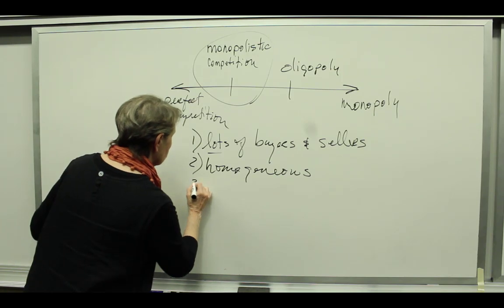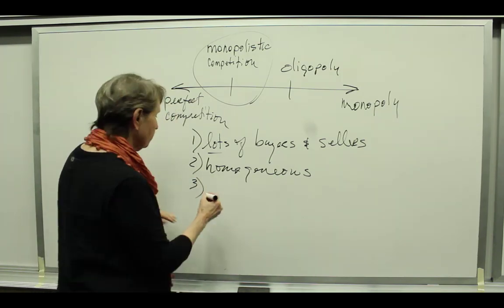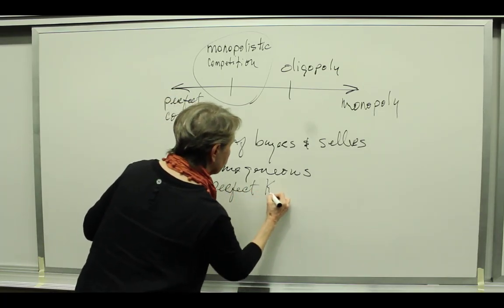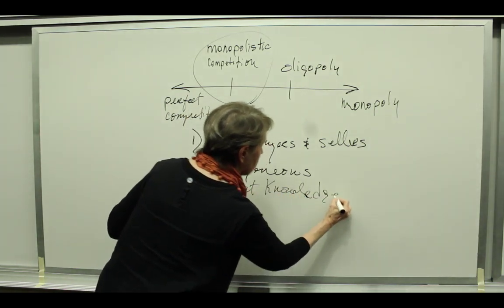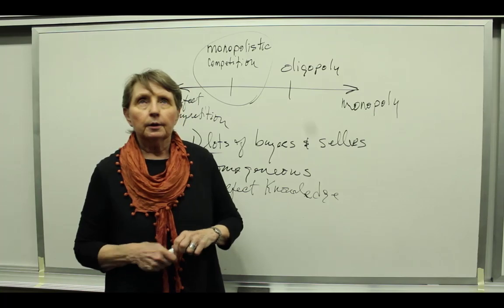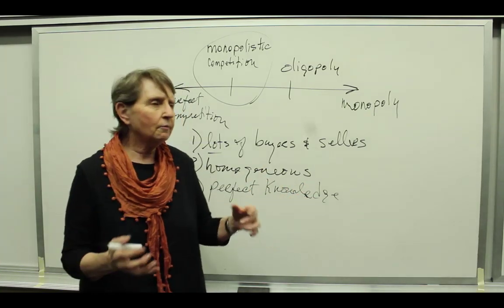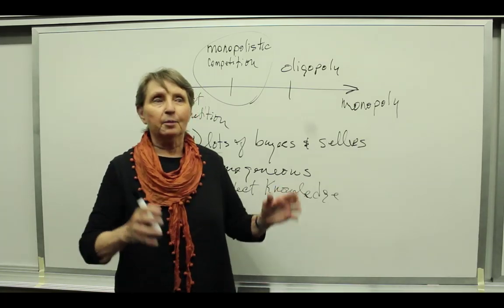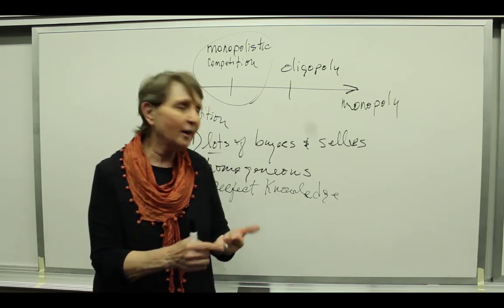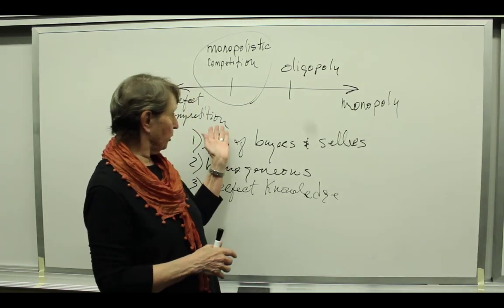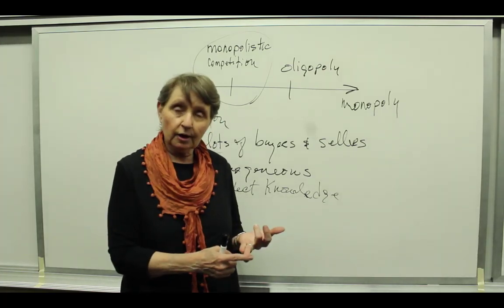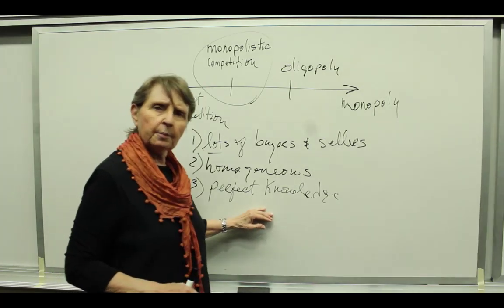The third criteria, textbooks often call it perfect knowledge. What we mean by perfect knowledge is that the cotton farmers — they don't even have the cotton seeds in the ground yet — but they know who's going to buy their cotton and they know what price they're going to get per pound. Furthermore, in a perfectly competitive market, the cotton gins know whose cotton they're going to buy and what price they're going to pay for it, and the cotton is not even in the ground yet. So that's what we mean by perfect knowledge.